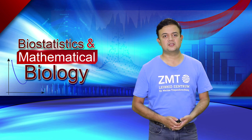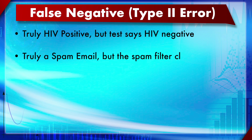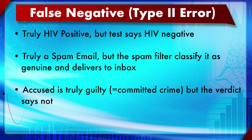Some examples of false negative: a truly HIV-positive person goes for HIV testing and the test says HIV negative — that is a false negative. A truly spam mail is classified by the spam filter as a genuine email and delivered into the inbox — again, a false negative. An accused who is truly guilty and actually committed the crime, but the verdict says not guilty or innocent — that is also a false negative.